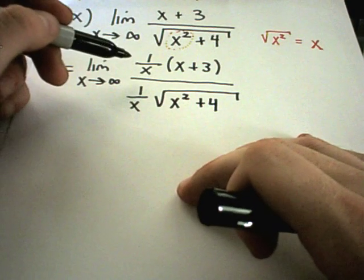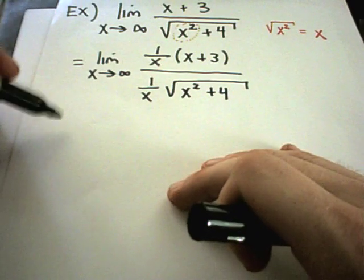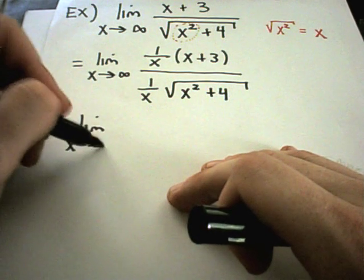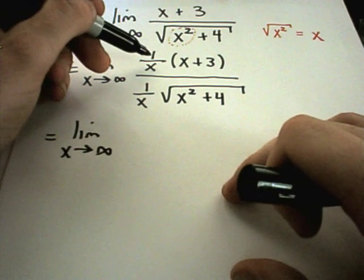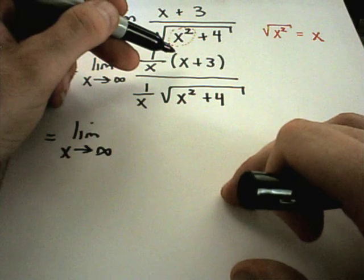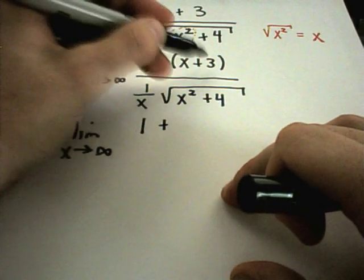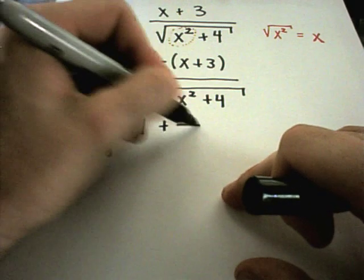Okay, so on the top's easy enough, I can distribute this out. So in the numerator, I'll have the limit as x goes to infinity. If I take 1 over x times x, I'll get x over x, which is 1. Then I'll have 1 over x times 3. That'll give me 3 over x.